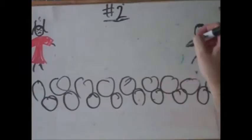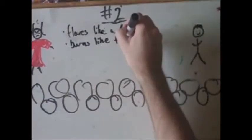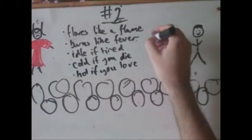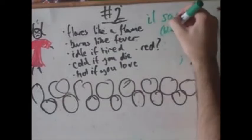Riddle number two. What flares like a flame, burns like a fever, grows tired if idle, grows cold if you die, hot if you love, and red like a sunset. The prince answers again, il sangue, blood. Correct again.